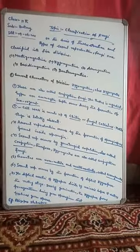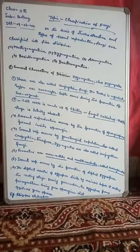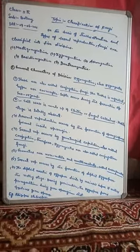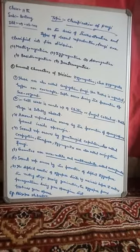Dear students, like the first division Mastigomycotina, this second division Zygomycotina has similar general characters. The thallus is mycelial — that is, the plant body is called the mycelium. The hyphae are coenocytic, as in the division Mastigomycotina.